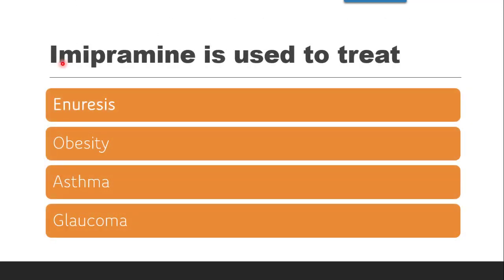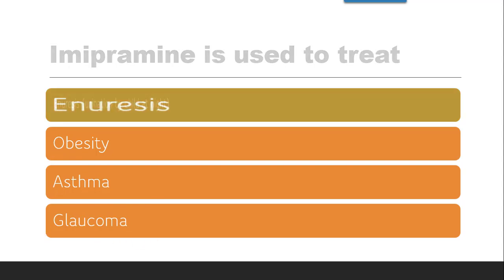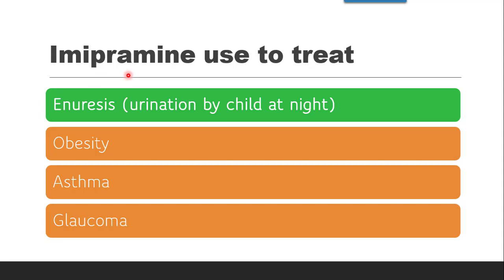Next question: Imipramine is used to treat — enuresis, obesity, asthma, or glaucoma? Since imipramine is an antidepressant drug it is basically used in depression, but it also treats enuresis. Enuresis is the condition of emergency urination — that is, urination by a child at night time. The treatment of enuresis can be done by imipramine.